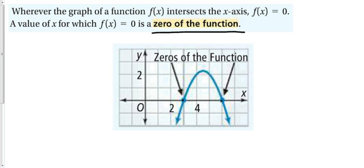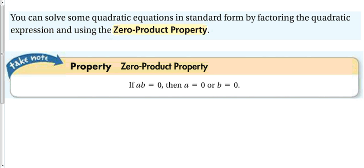In order to figure out what these zeros actually are, we're going to use something called the zero product property. You can solve some quadratic equations in standard form by factoring the quadratic expression and then using the zero product property. What the zero product property says is that if I have two different variables and I multiply them together, or two different things, if I multiply them together and get an answer of zero, then one of these two things must be zero. That's the only way to get zero when you're multiplying. Something has to be zero to get zero when you multiply two things together.